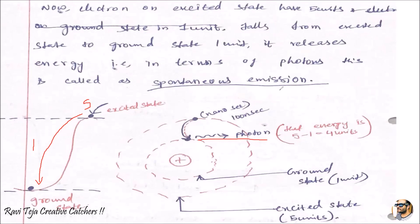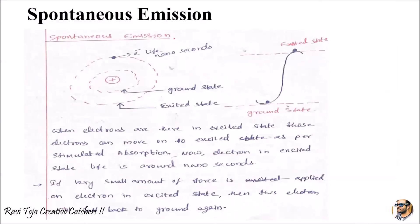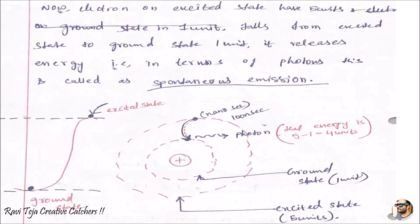In the whole operation of this laser, you need to consider two things: one is stimulated absorption — gaining energy by the electron — and spontaneous emission — losing energy due to instability in the excited state. Based on losing this energy, it is transformed into a photon, and that photon light is the laser light. You can see the release of energy when the electron falls from the higher excited state to the ground state in the form of laser light.